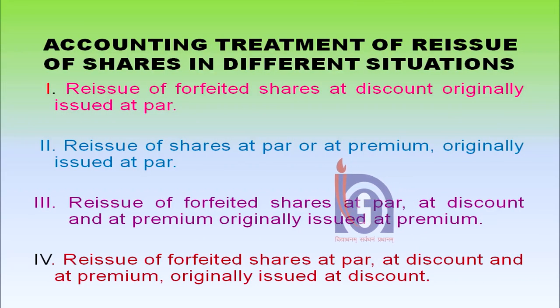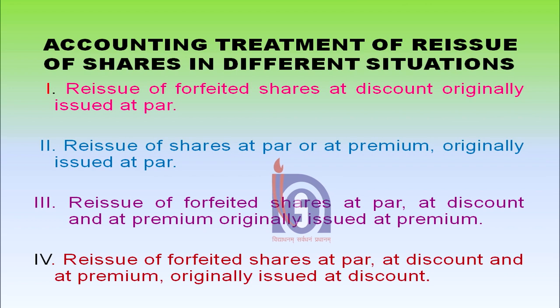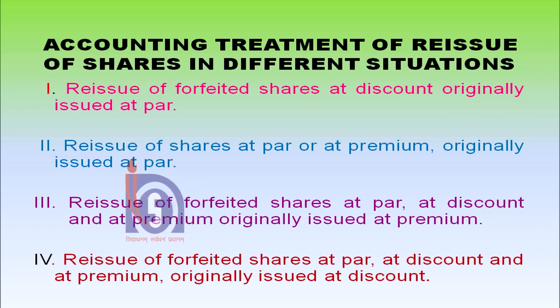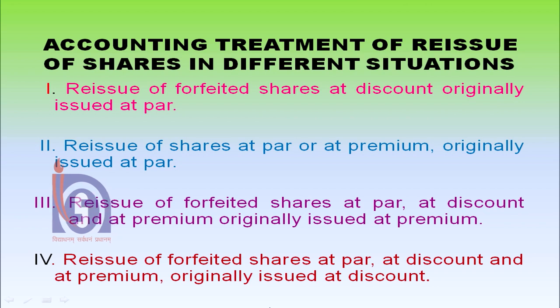Now we shall learn about the accounting treatment of reissue of shares under different situations. First would be the reissue of forfeited shares at discount that were originally issued at par. Second is reissue of shares at par or at premium that was originally issued at par. Third is reissue of forfeited shares at par, at discount, or at premium, but they were originally issued at discount. We will discuss one by one the accounting treatments related under these different situations.